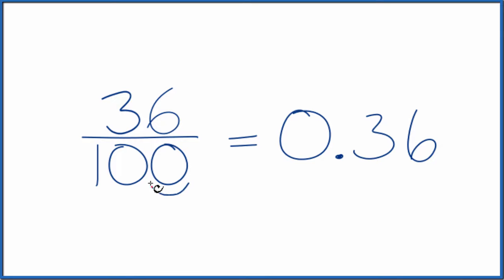Now we have 1.00, that's just one. But we also have to move two decimal places to the left in the numerator, so now we have 0.36 over 1, which is just 0.36.